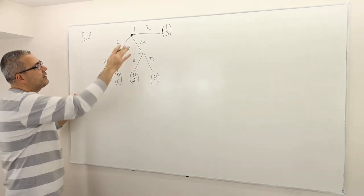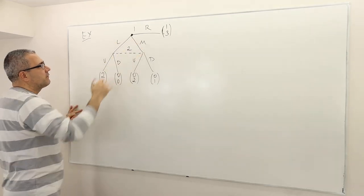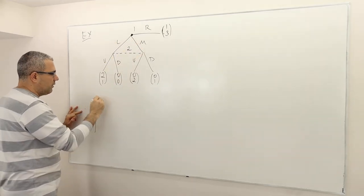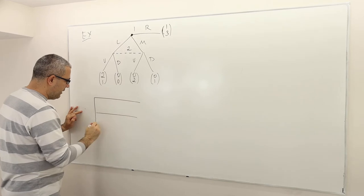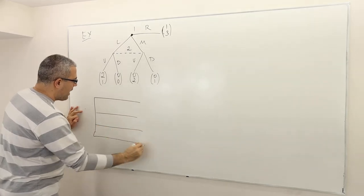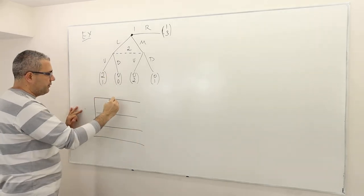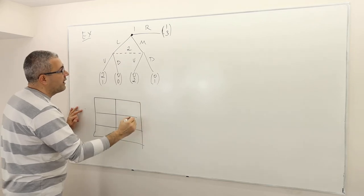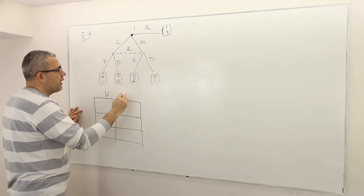So how many strategies does player one have? Three: L, M, and R. So there are going to be three rows. And then how many strategies does player two have? Two: U and D. So therefore, there are going to be two columns.